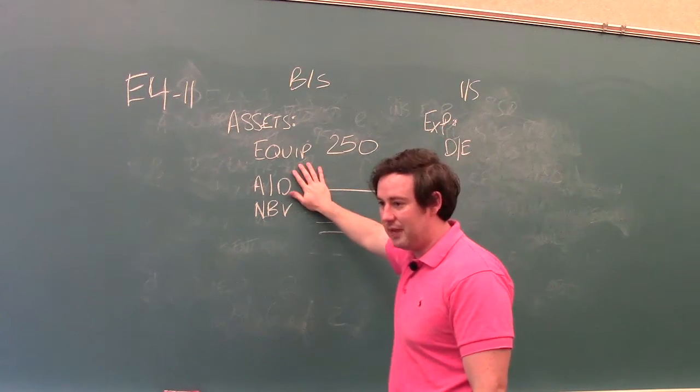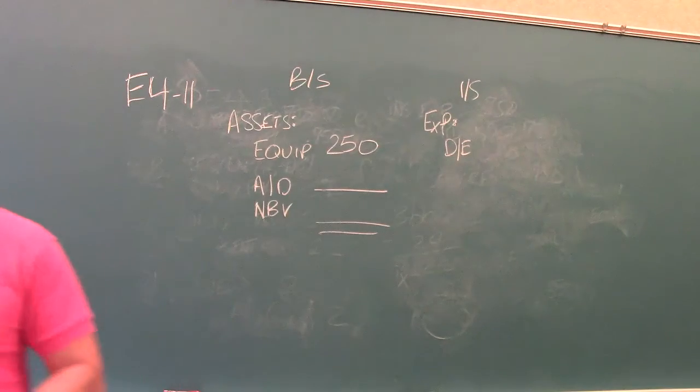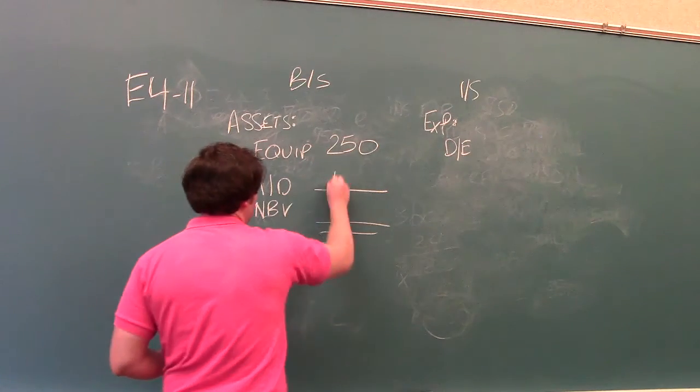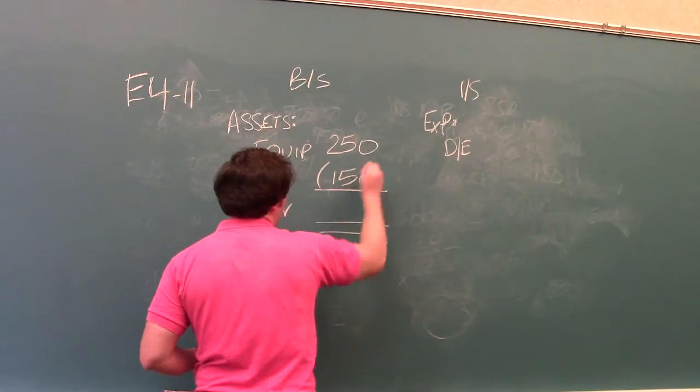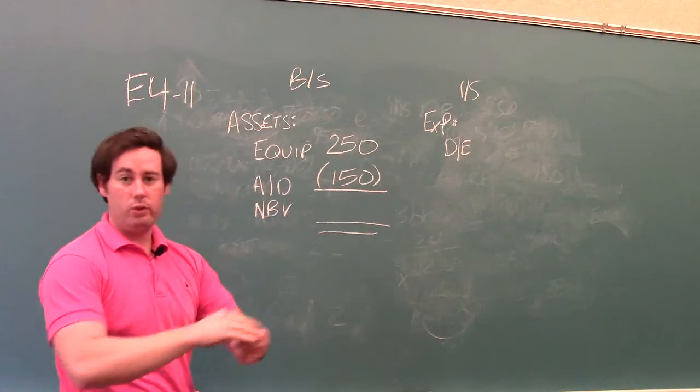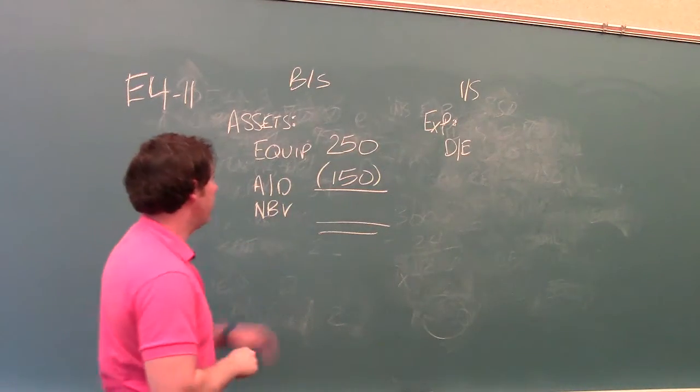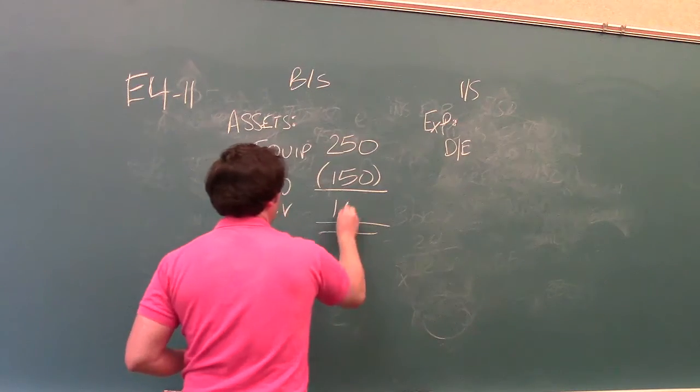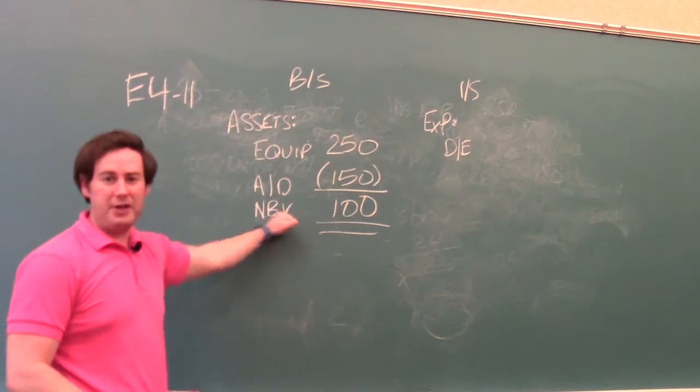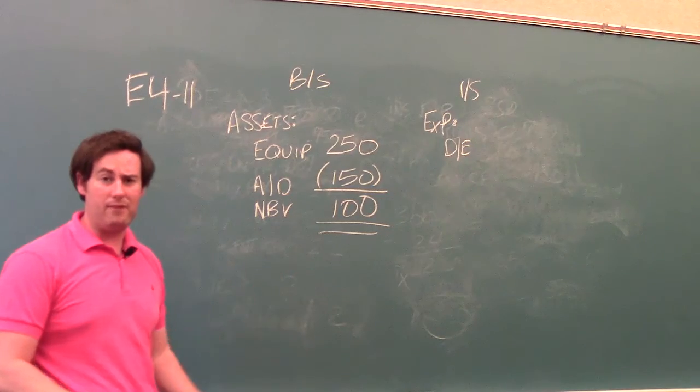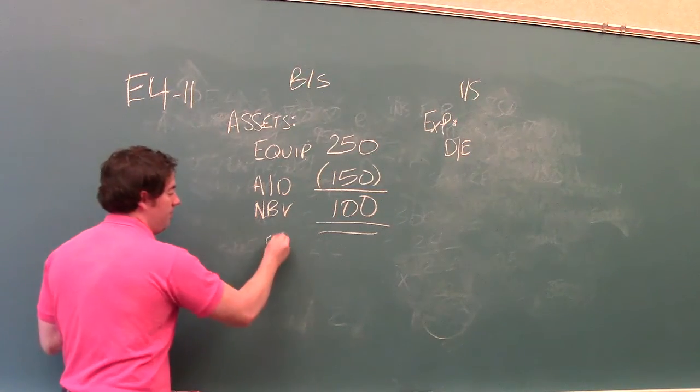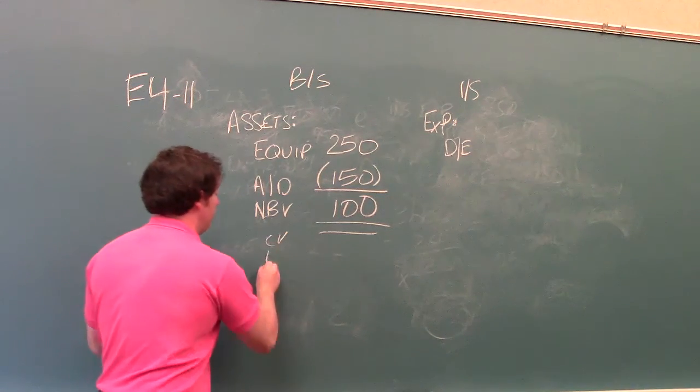The second part that they give us, they tell us that accumulated depreciation up to date is now $150,000. I'm going to put parentheses around this indicating that we're subtracting out the amount. $250,000 minus $150,000 means that we have $100,000 net book value. NBV stands for net book value. This is also known as carrying value, CV, or just book value.